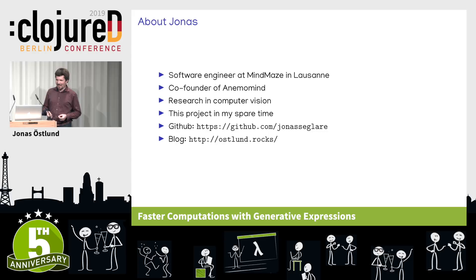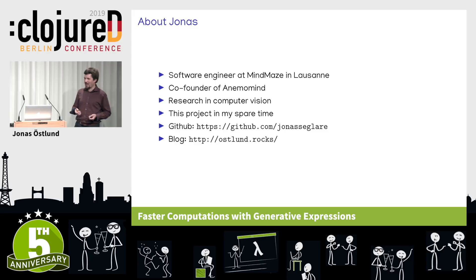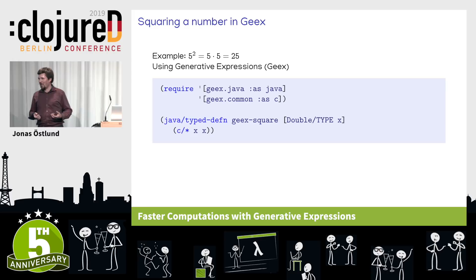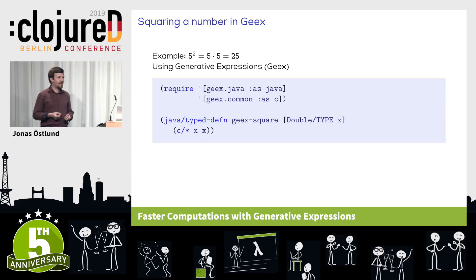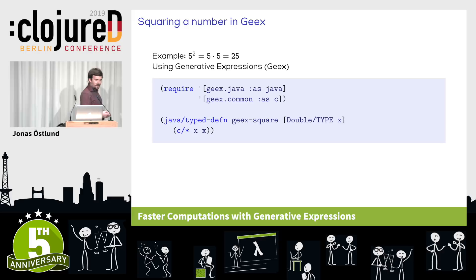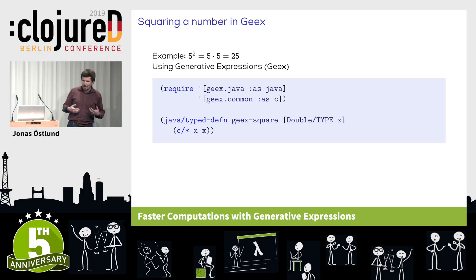This project I am presenting today is something I have developed in my spare time for fun. I also have a GitHub account and a blog where I write posts every now and then. But let's look into what these generative expressions really are. I will start with the smallest interesting example I could come up with, which is to compute the square of a number — a number multiplied by itself. For instance, the square of 5 is 5 times 5, which is 25.